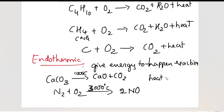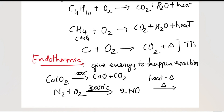Heat is also represented by the symbol delta (Δ). On the arrow mark you can write a small triangle, or on the product side instead of plus heat you can write plus delta. If heat energy is released, temperature increases in the surroundings; if you are giving energy, you have to supply more heat.